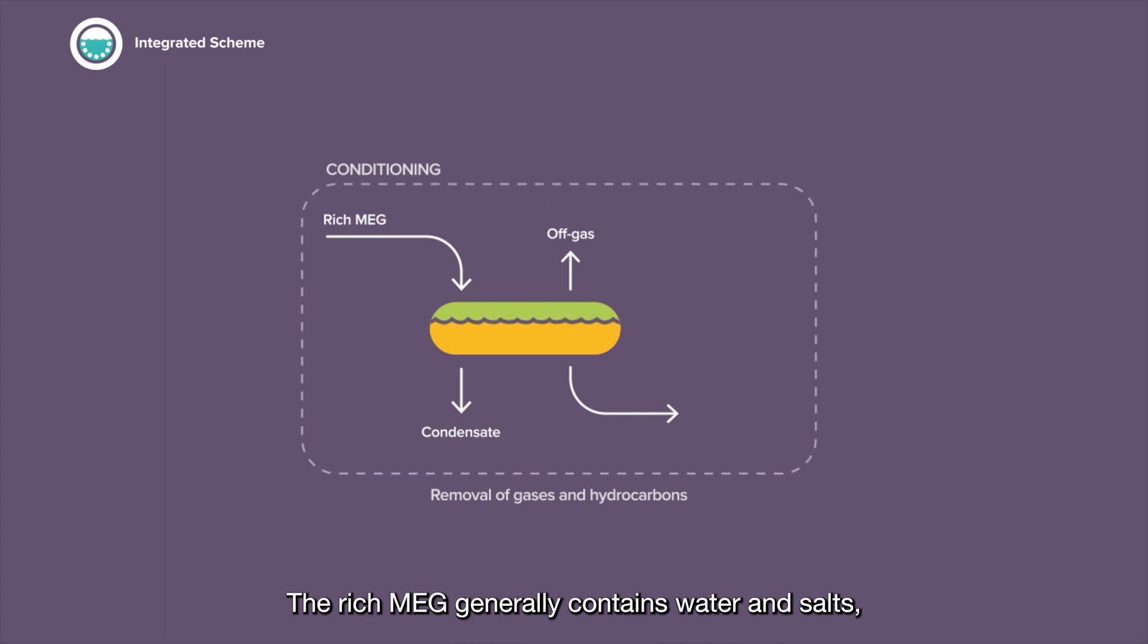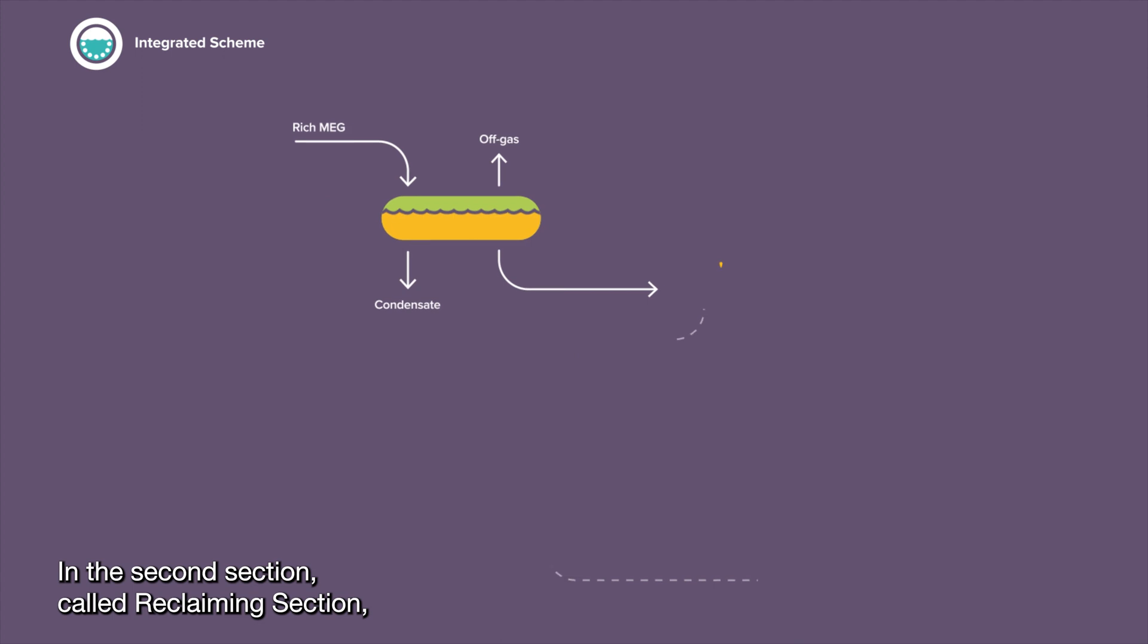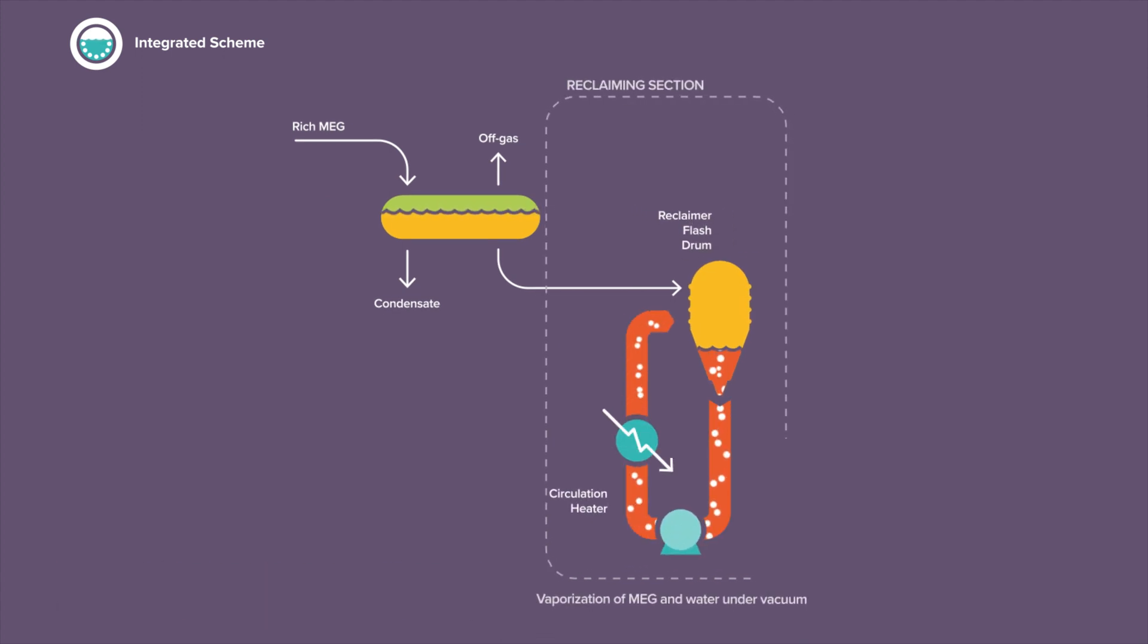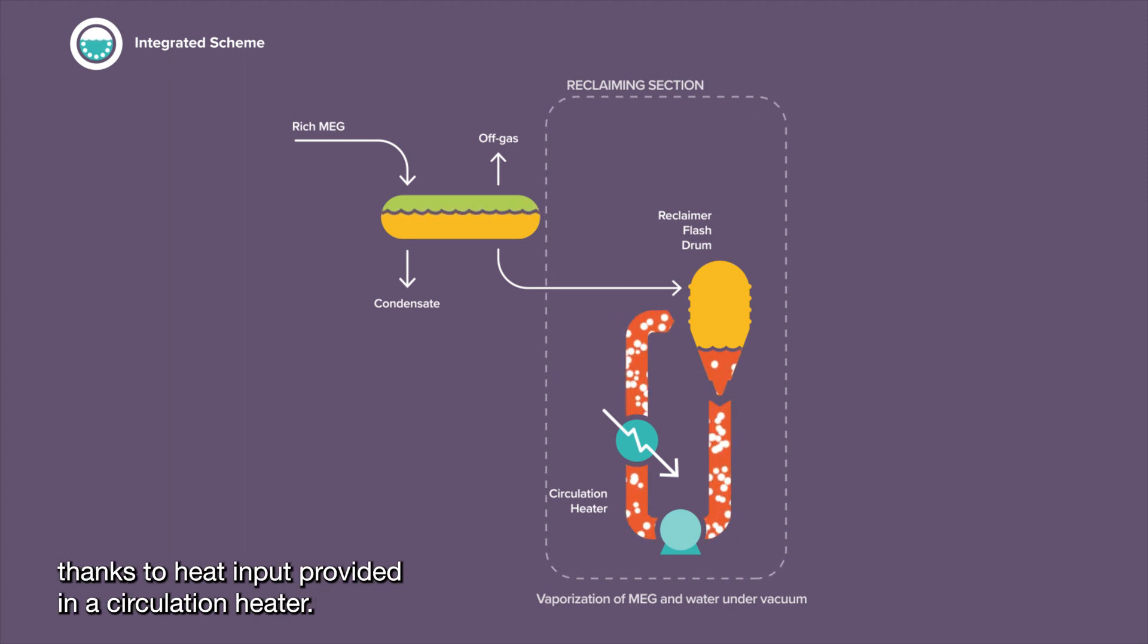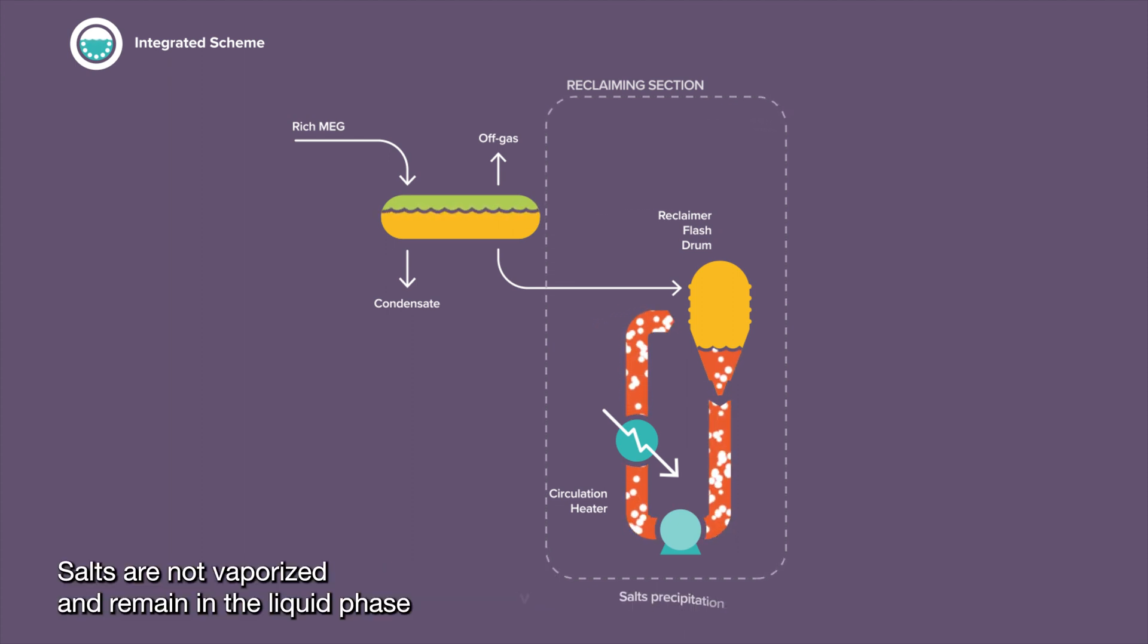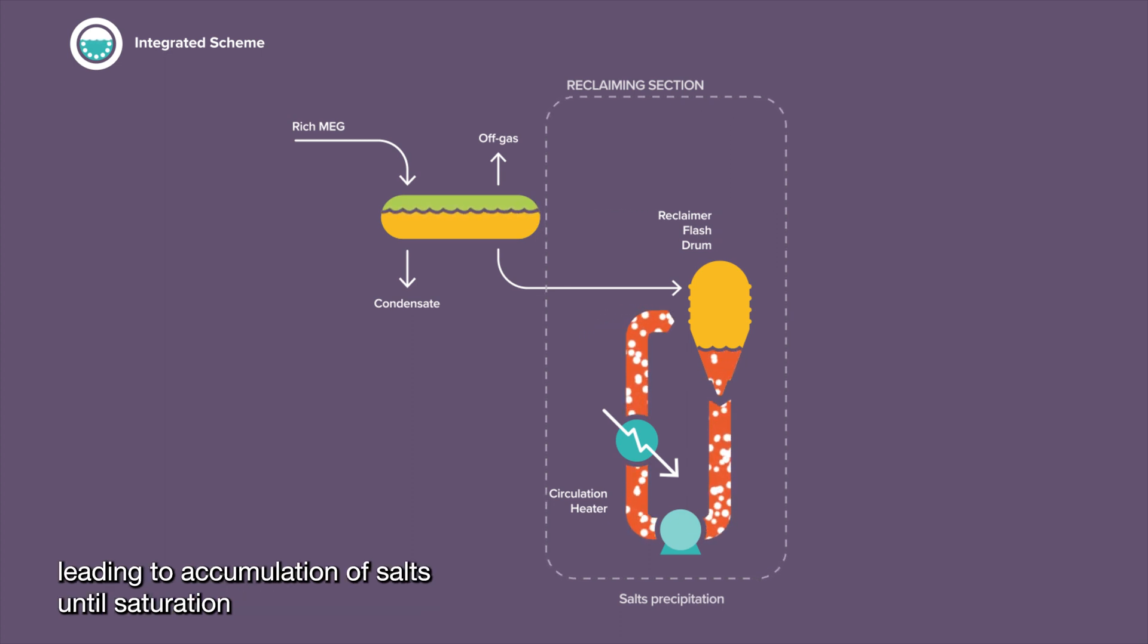The rich MEG generally contains water and salts, as well as other contaminants. In the second section, called reclaiming section, MEG and water are vaporized under vacuum in the reclaimer flash drum, thanks to heat input provided in a circulation heater. Salts are not vaporized and remain in the liquid phase, leading to accumulation of salts until saturation and then precipitation.